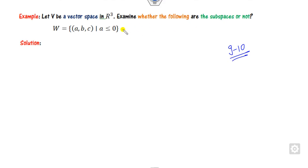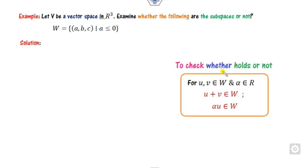Let us discuss nine to ten examples. What is given: W is a subset of R³ — so V is R³ — and we need to check whether W is a subspace. The target is simply to check whether the three properties are satisfied.